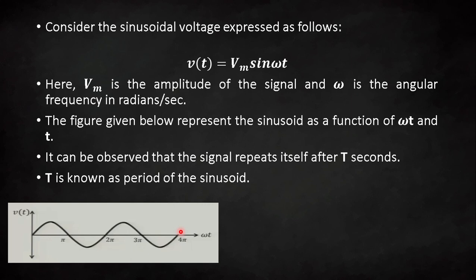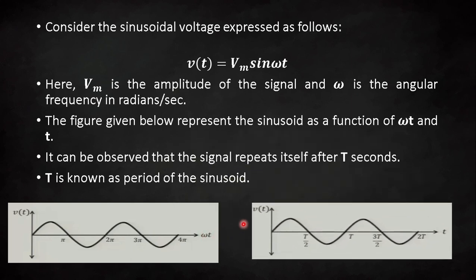A periodic signal is one that repeats itself after some duration. The signal repeats after ωt = 2π. On a voltage versus time graph, after T seconds the signal repeats itself. This T is known as the period of the sinusoid. From the previous figure, ωT = 2π, which gives T = 2π/ω.